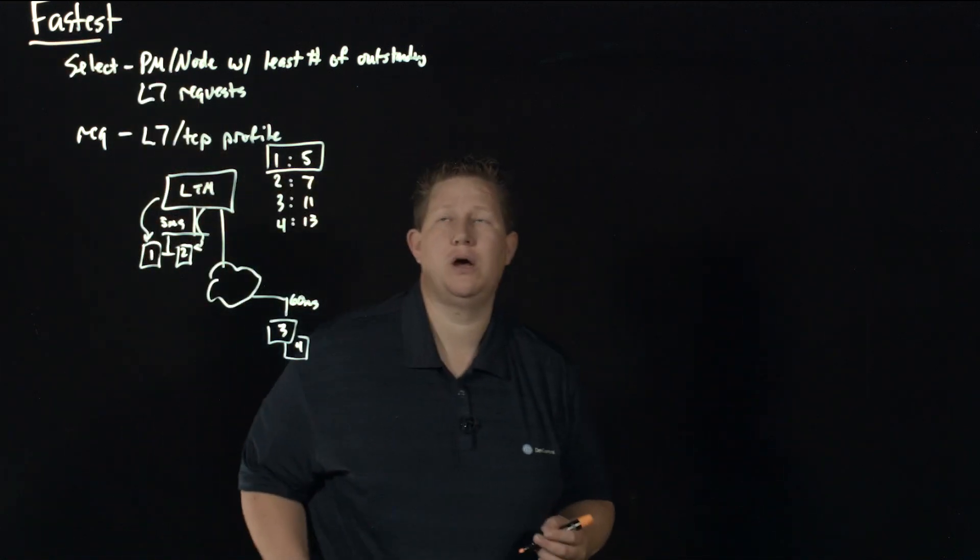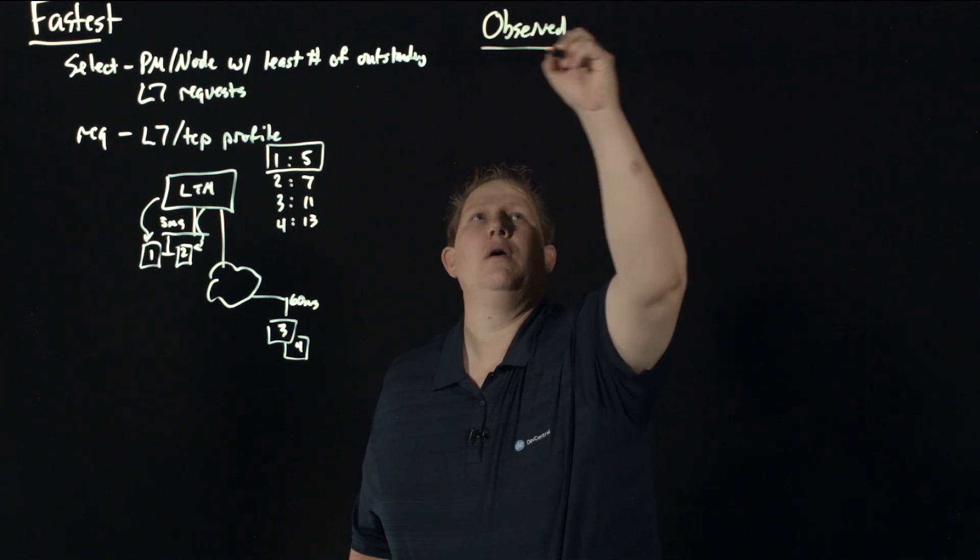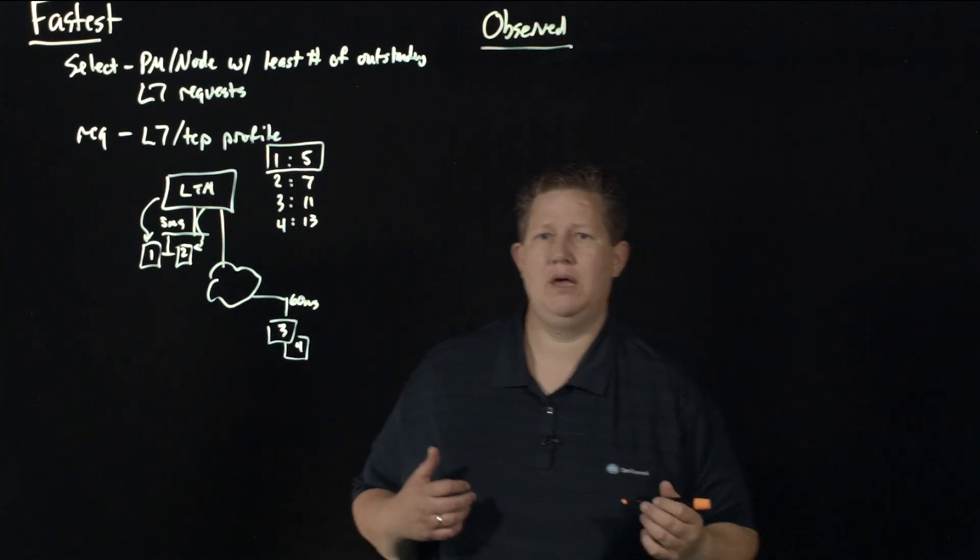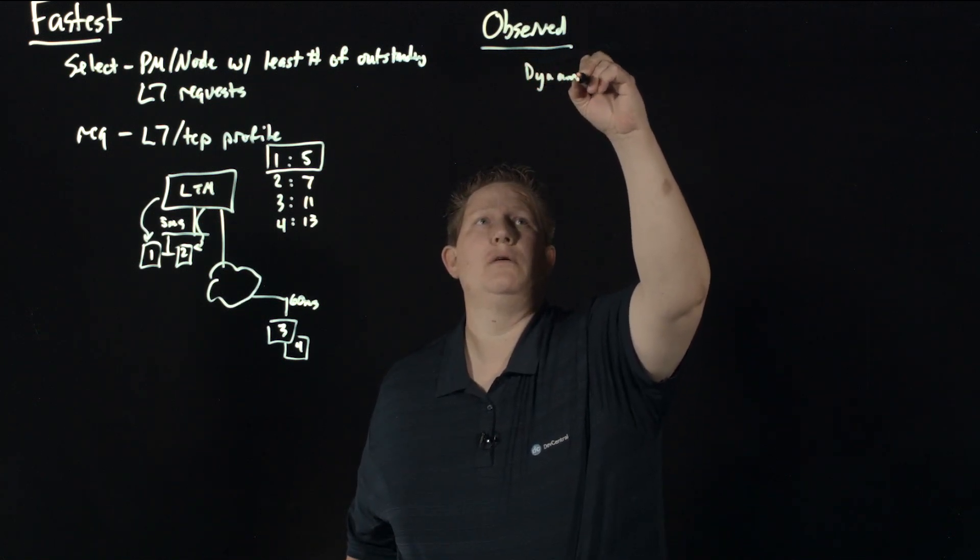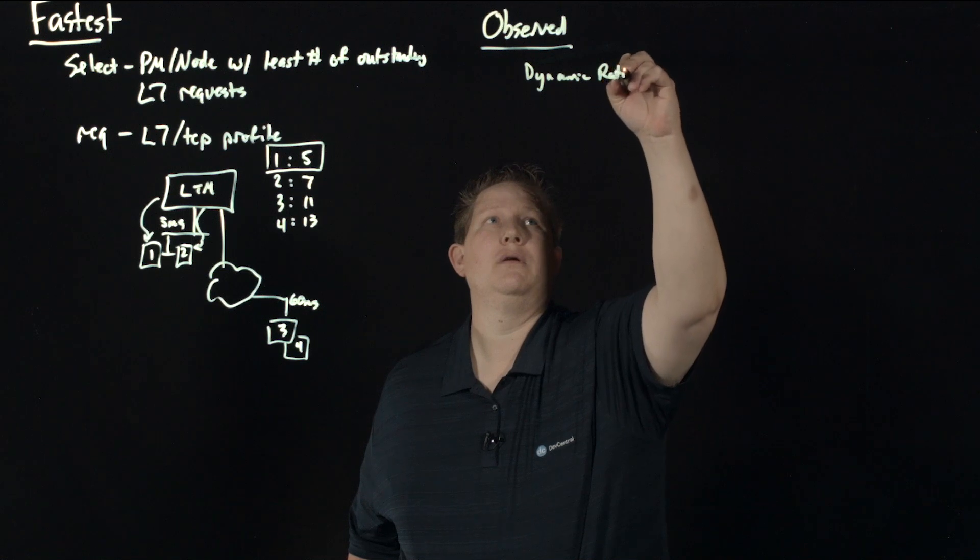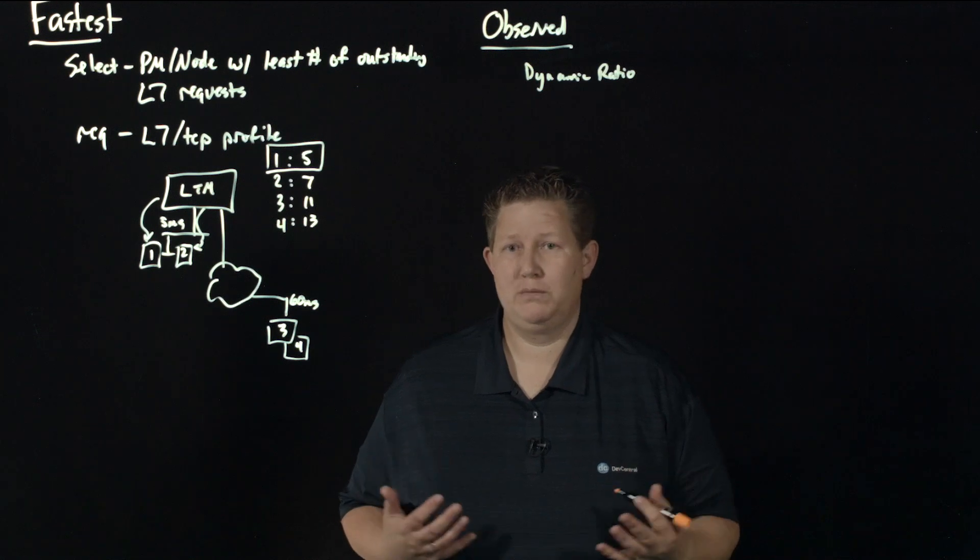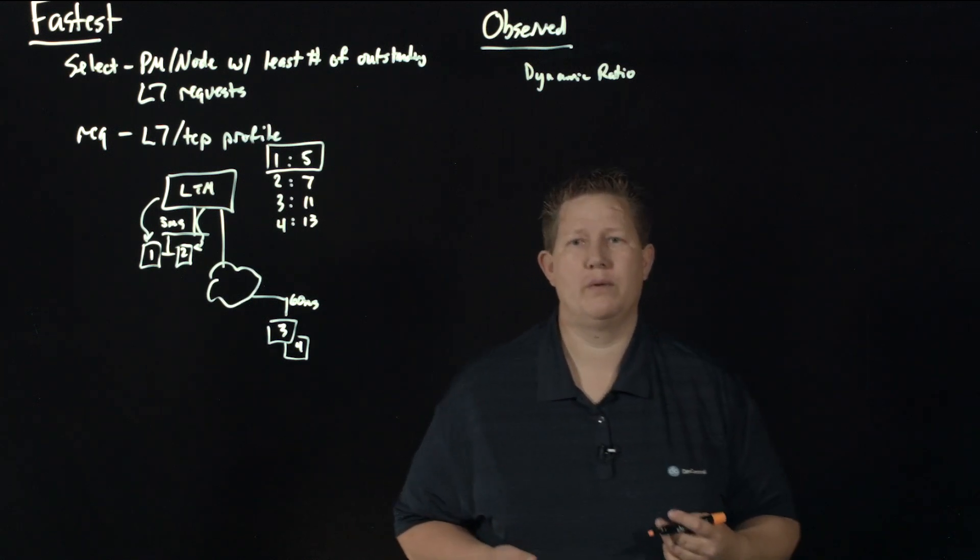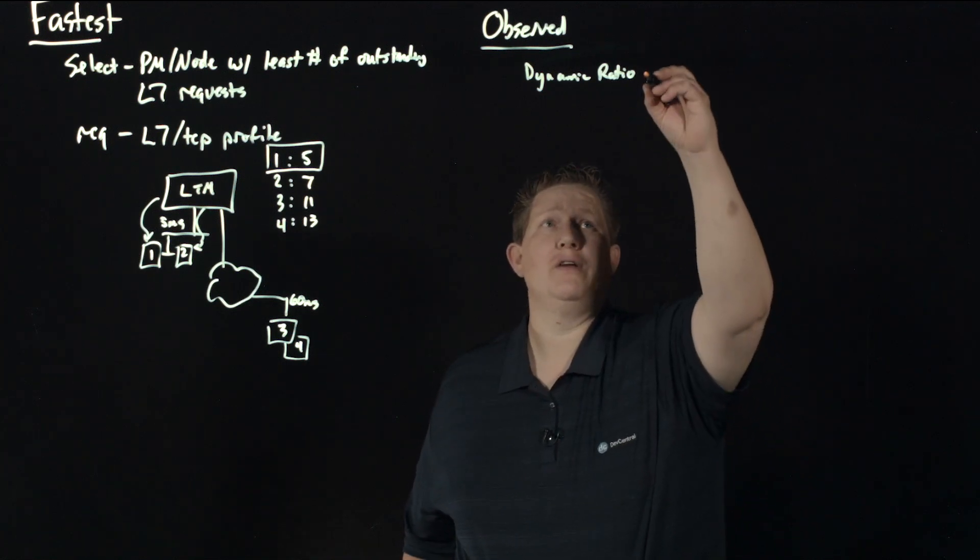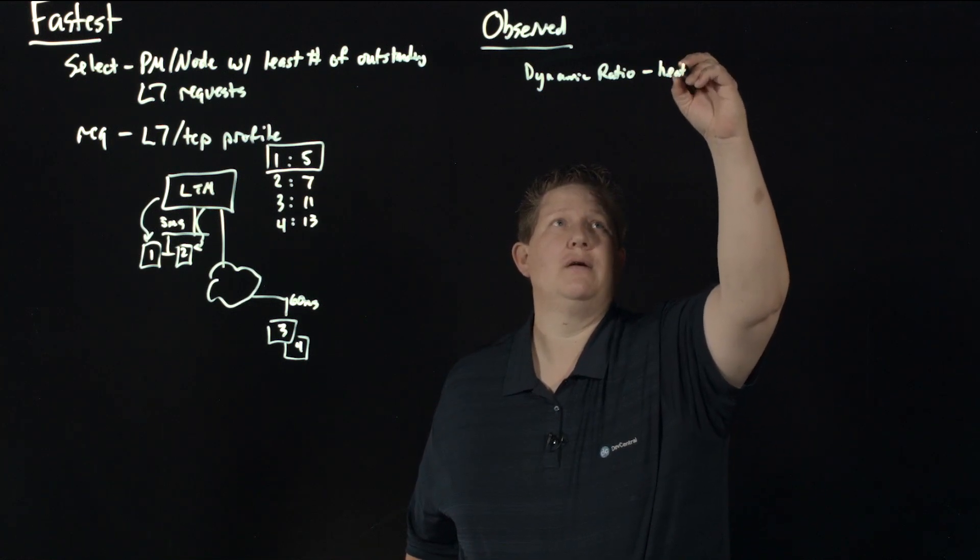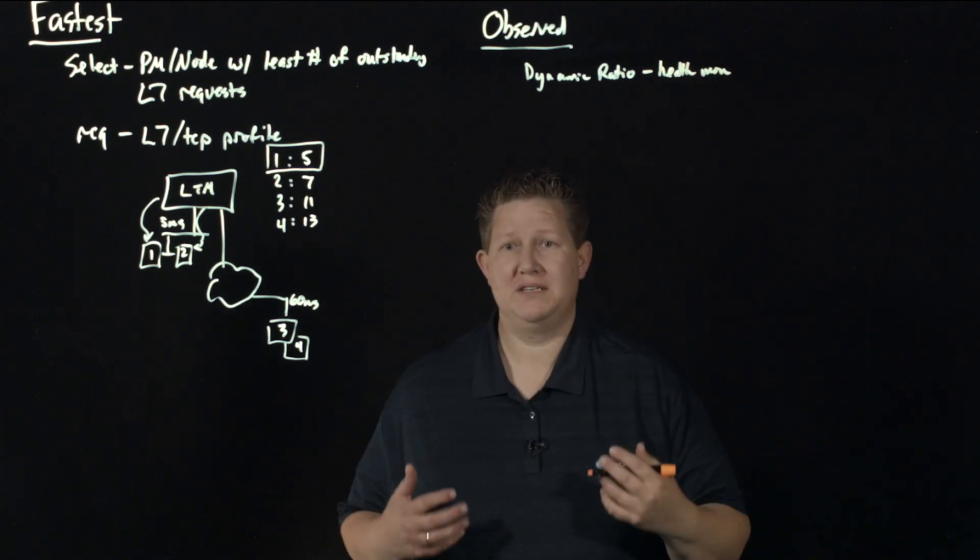Let's talk about observed. Observed is effectively dynamic ratio in that it's using a dynamic ratio to establish which pool member or node is going to get the request and it's using the greatest ratio. The difference is with dynamic ratio it uses a health monitor, but with observed it's using system traffic.